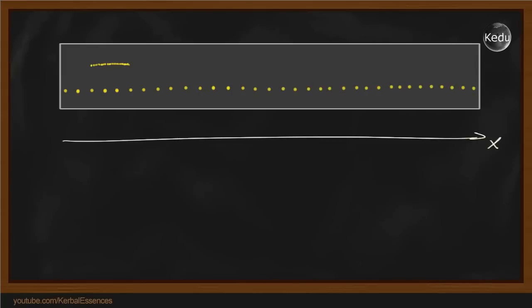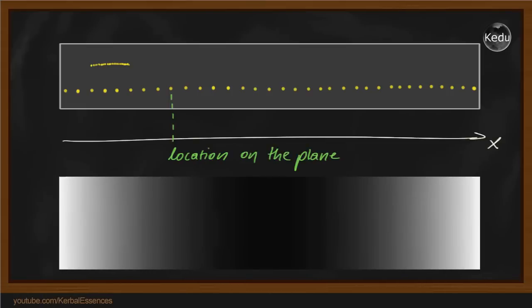The computer now calculates all the values on the plate for a single moment of time. This could look like this. Each calculated element is represented by a pixel in this grayscale picture. The color represents the temperature. White is very hot while black is rather cool.